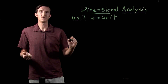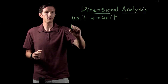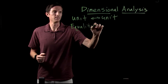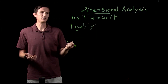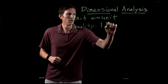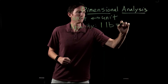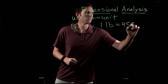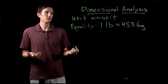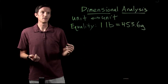In order to do dimensional analysis, we're going to use a couple different bits of information. The first is what we call an equality. An equality is simply saying: if I had one pound of a substance, how many grams would that be? Well, that would be 453.6 grams — we have equal amounts expressed in different units.